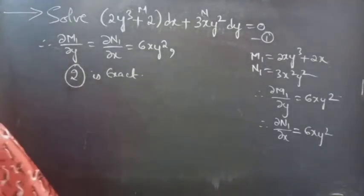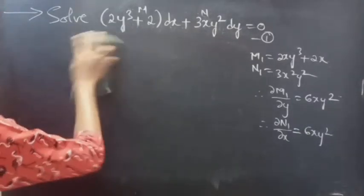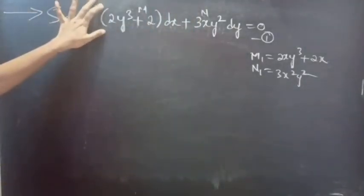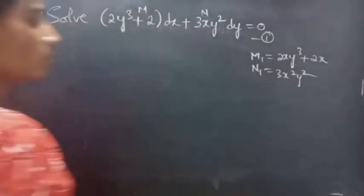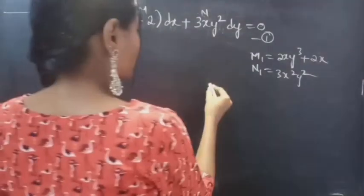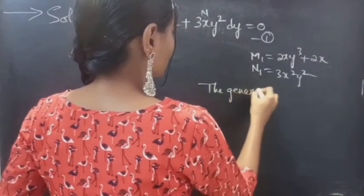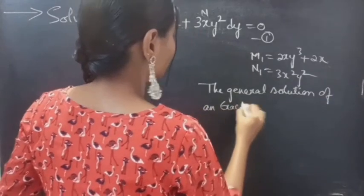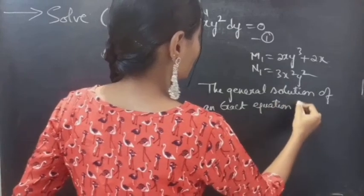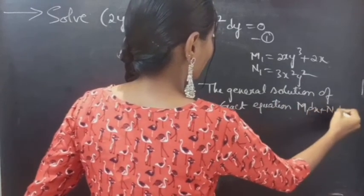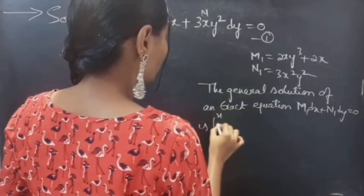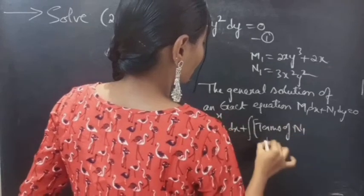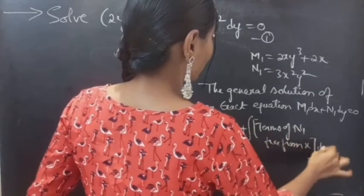Now we need to find the general solution to the given equation. The general solution of equation 2 will be the general solution of equation 1. The general solution of an exact equation in M1·dx + N1·dy = 0 form is given by: ∫(over x) M1·dx + ∫(terms of N1 free from x)·dy = c.